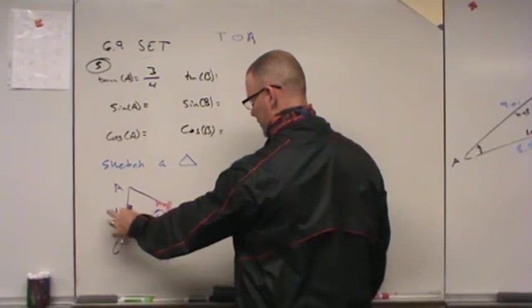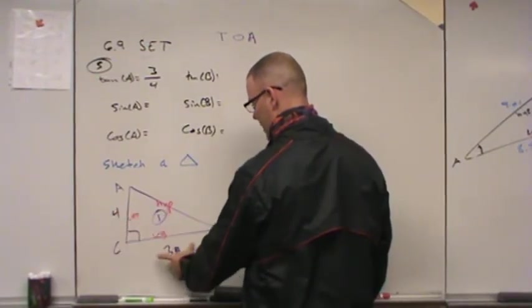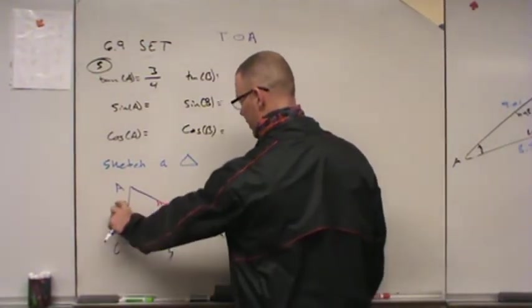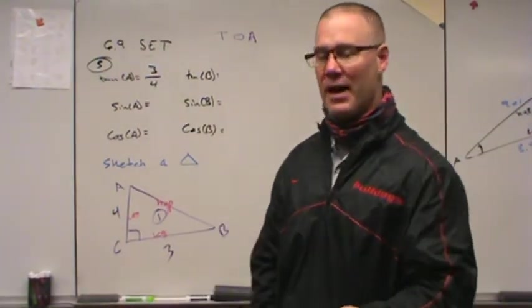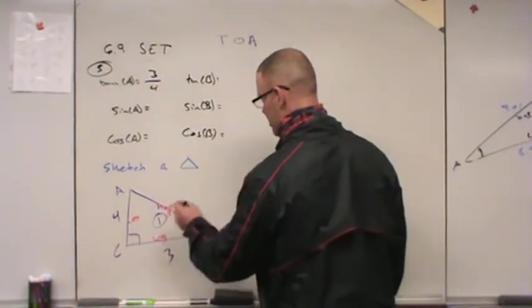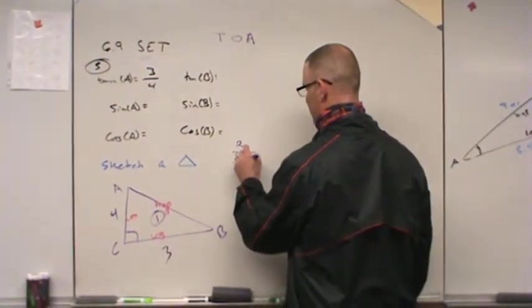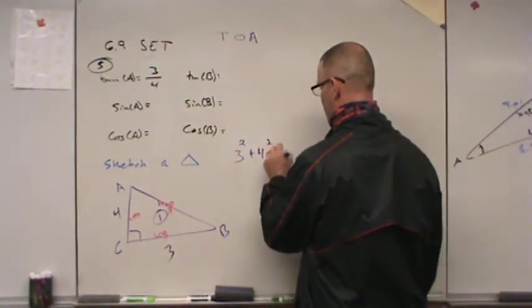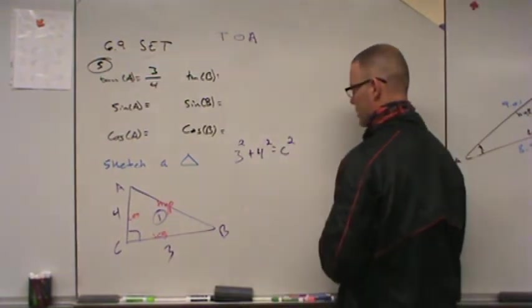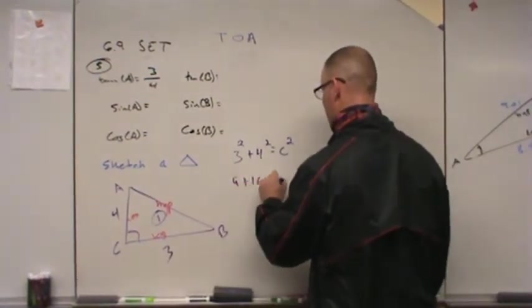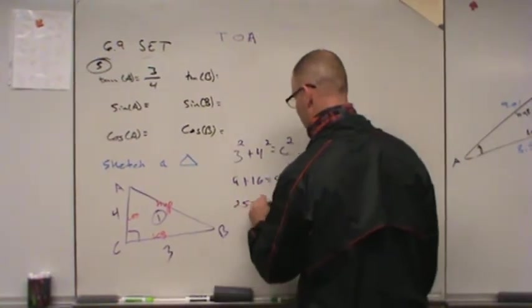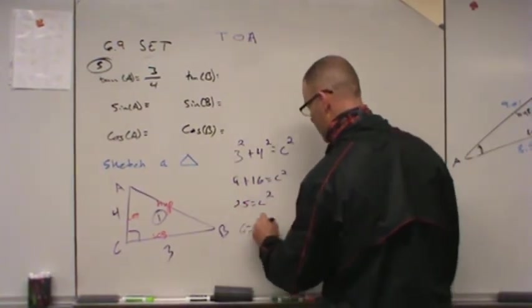So when I look at this, I have a leg of 3, a leg of 4, and I want to know what is the hypotenuse? How do I find that? Well, the hypotenuse is created by using Pythag. So 3 squared plus 4 squared, sorry about that, equals C squared. And I could go through and I could say 9 plus 16 equals C squared. 25 equals C squared. Or C is equal to 5.